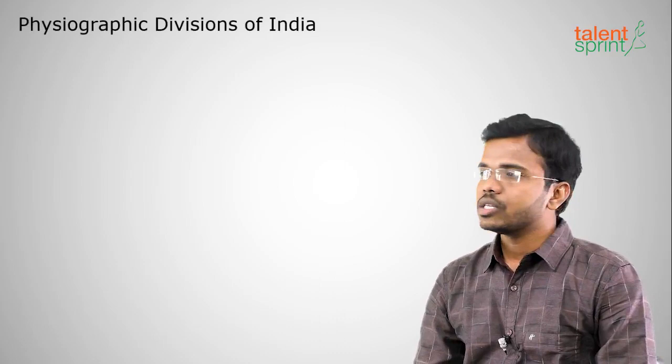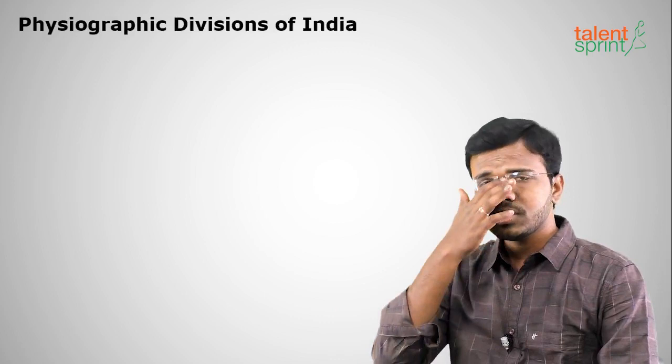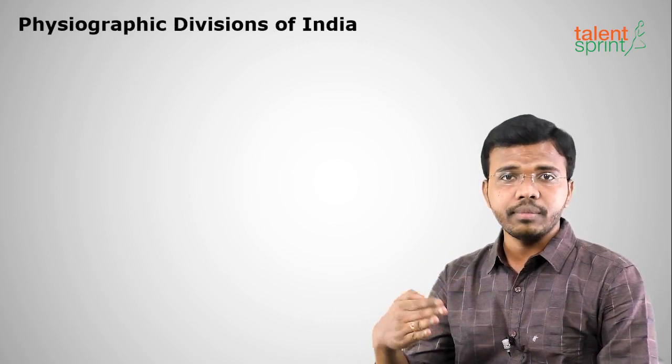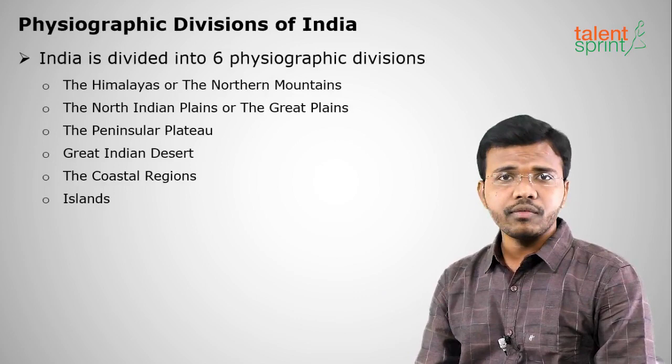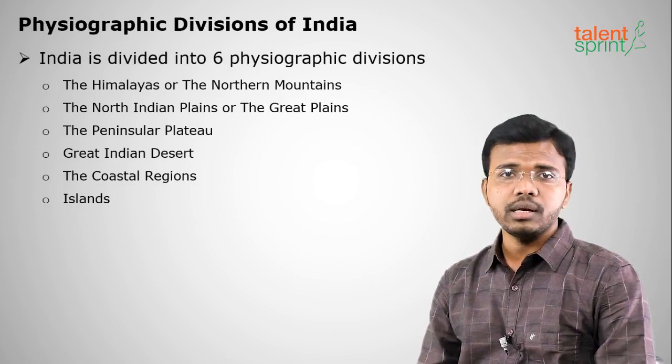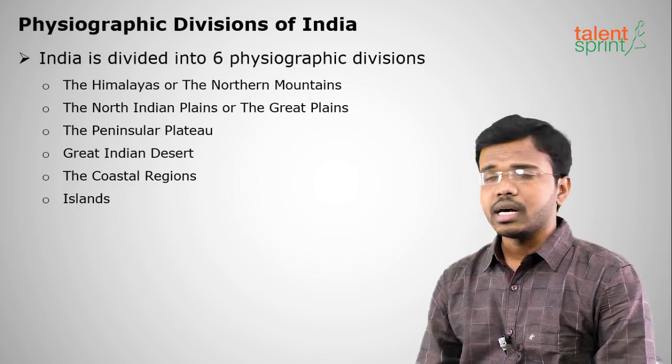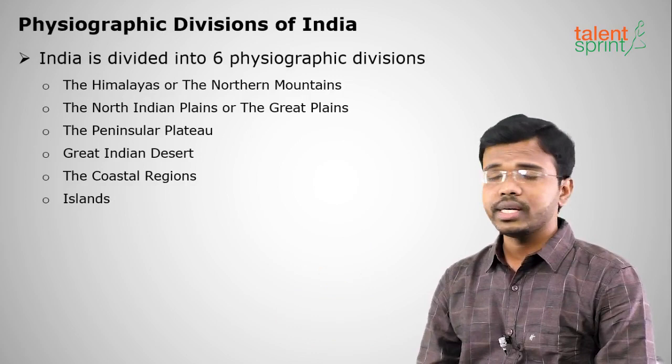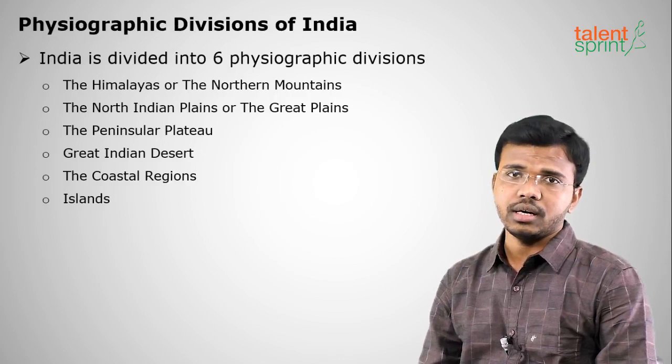Physiographic divisions means the divisions done based on geography — how the land or terrain is divided. There are six physiographic divisions in India: the Northern Mountains or the Himalayas, the North Indian Plains or the Great Indian Plains, the Peninsular Plateau, the Great Indian Desert, the Coastal Regions, and the Islands.